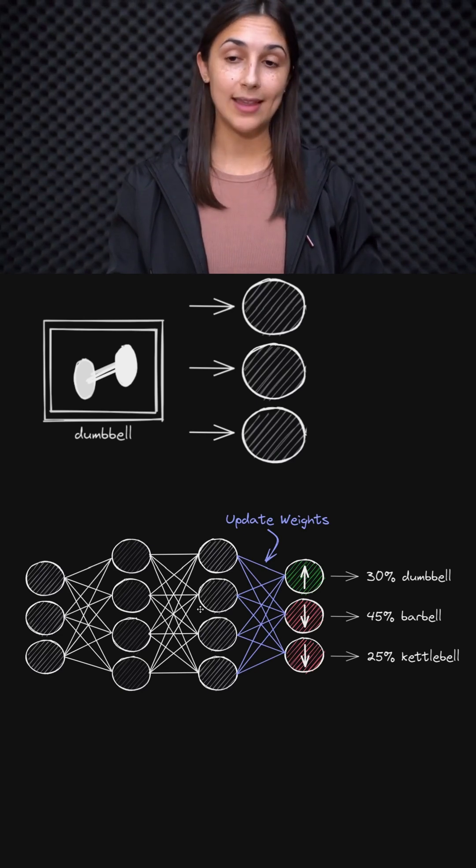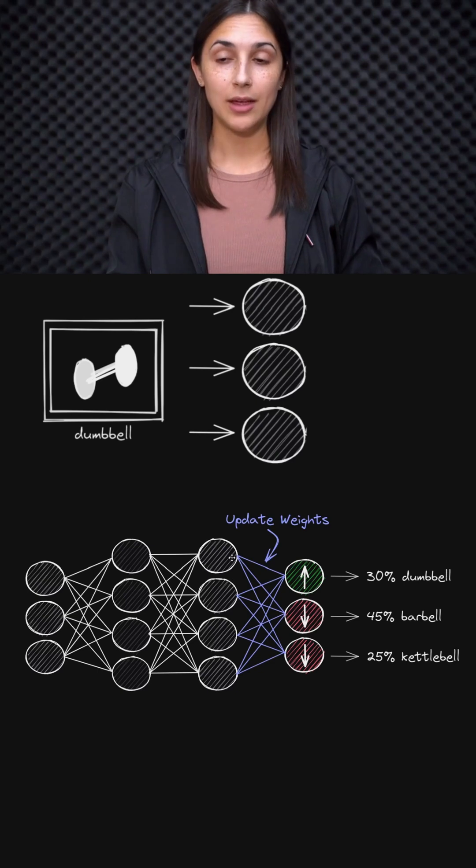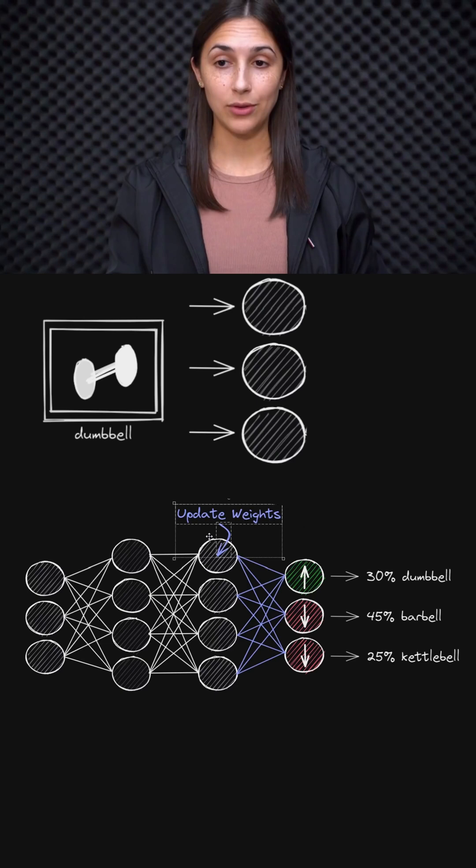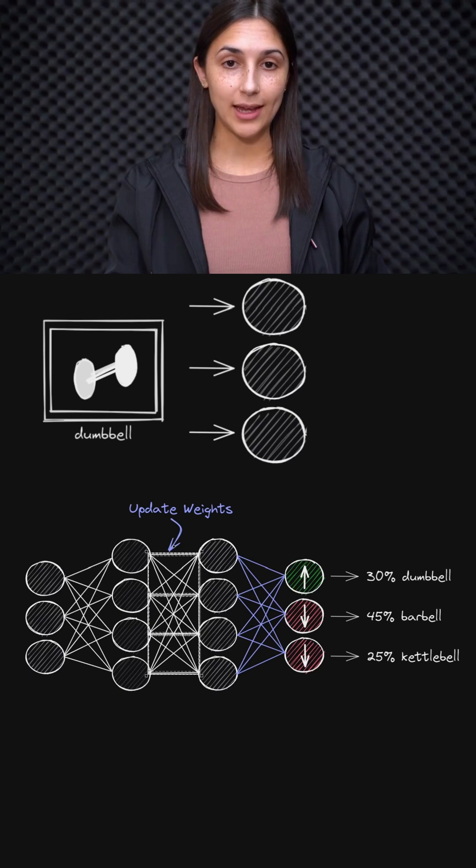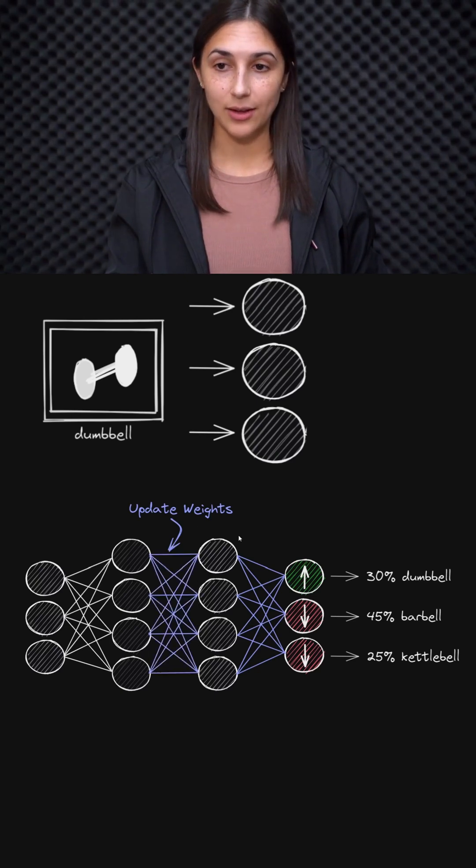So if we want to influence the activation output from this layer here, we can't do it directly, but indirectly we can by taking a step backwards to this previous layer and updating all of these weights. We can quickly change the color of these weights here to reflect them as being the ones that are being updated now.